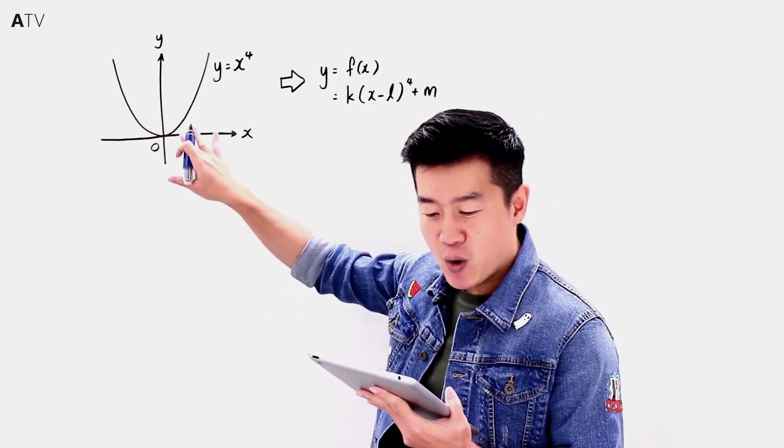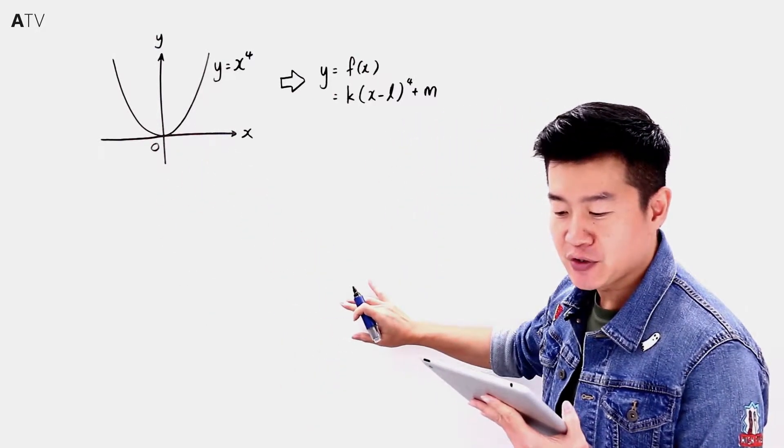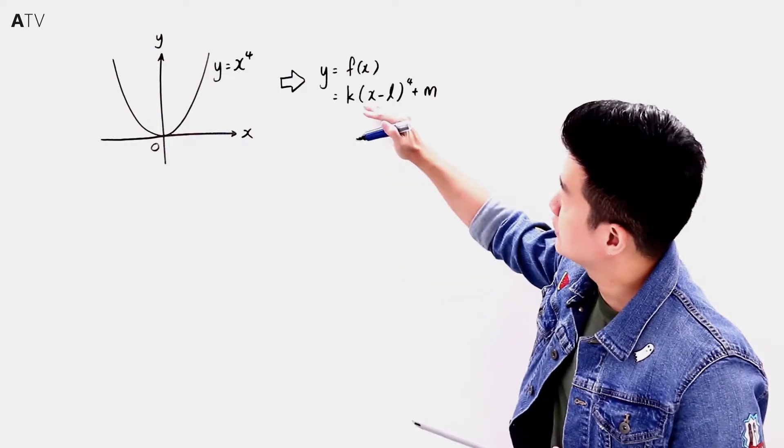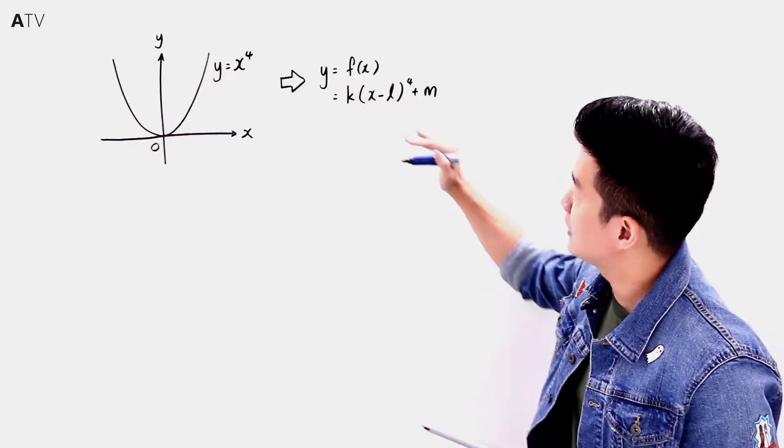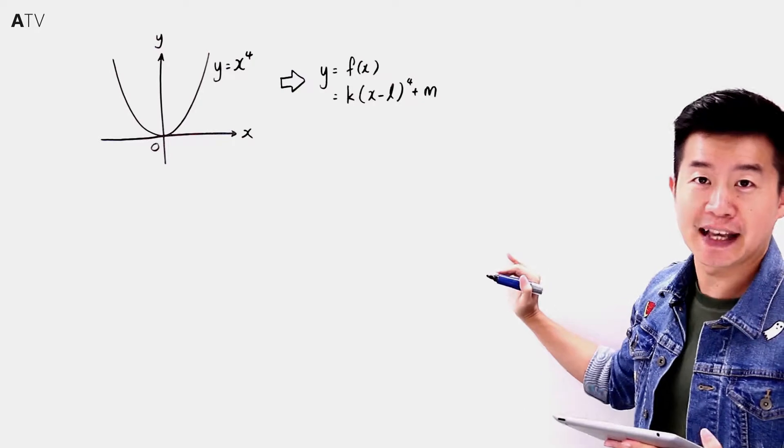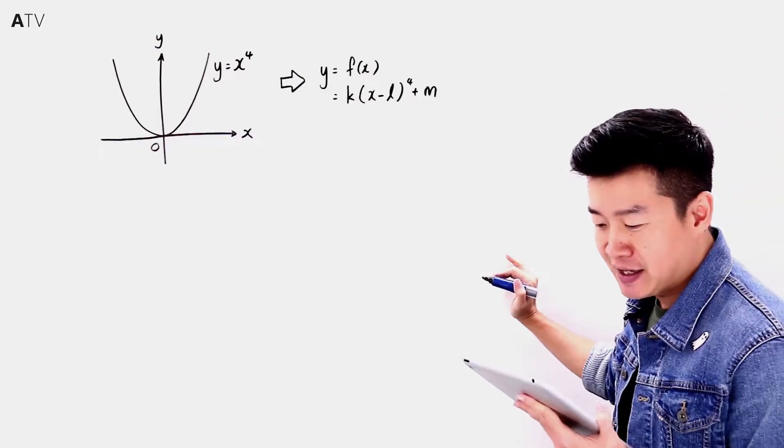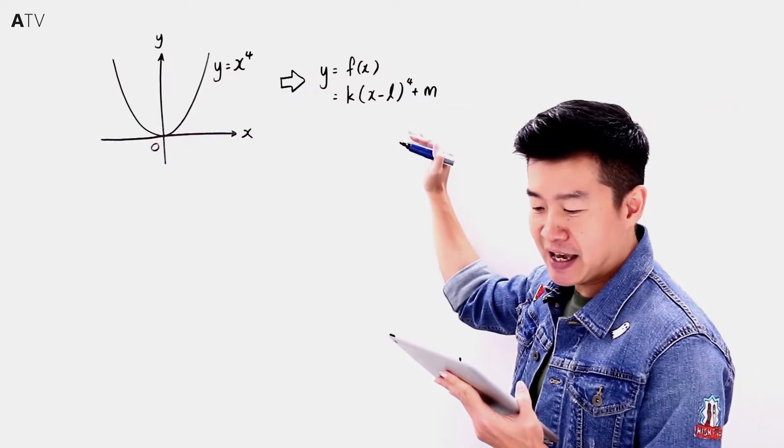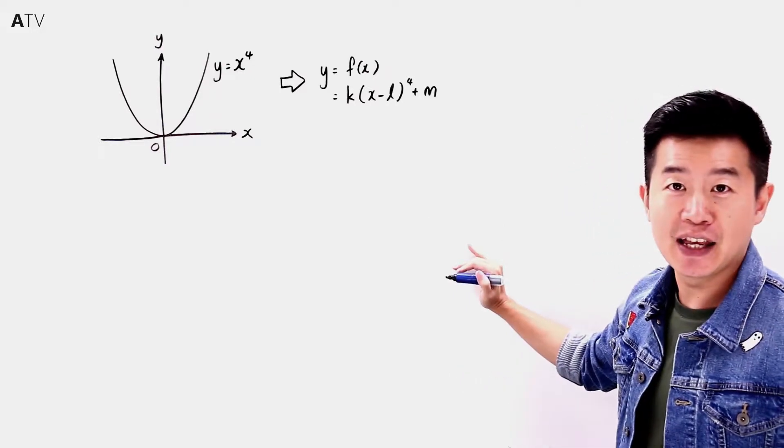We are given that the curve y = x⁴ is transformed onto the curve with equation y = k(x - l)⁴ + m. It is given that this curve has a turning point at (a, b).